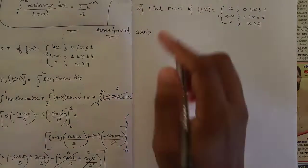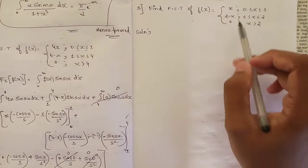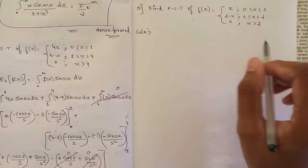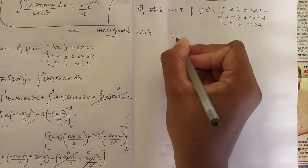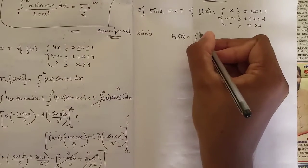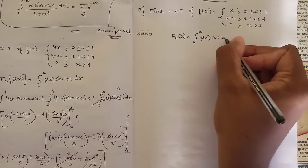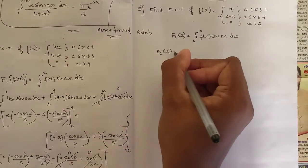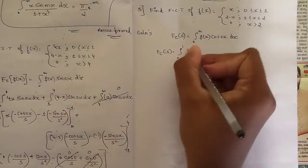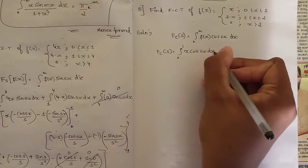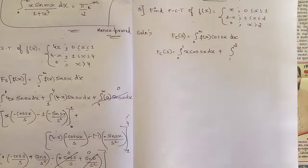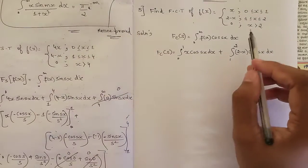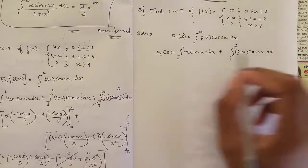The next question: find the Fourier cosine transform of f(x), where f(x) = x for x in [0,1], f(x) = 2 - x for x in [1,2], and f(x) = 0 for x > 2. F_c(s) = ∫₀^∞ f(x)·cos(sx)·dx, split as ∫₀¹ x·cos(sx)·dx + ∫₁² (2-x)·cos(sx)·dx, since the third piece is zero.